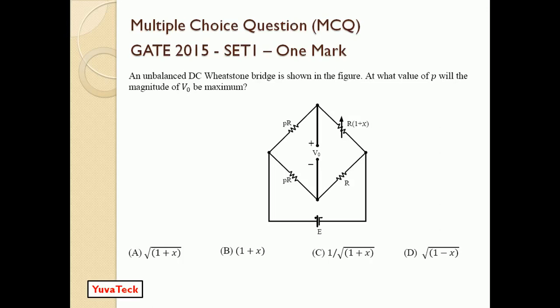We need to find at what value of rho the magnitude of V naught will be maximum. As you know, when the bridge is under the balance condition, the voltage across — that is, the V naught value — will be equal to zero, or I_G is equal to zero. But here, that is not the case.